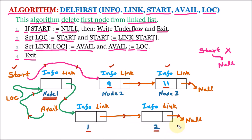These are the free nodes. So that was the algorithm to delete the first node from a linked list — we deleted node 1 from the main linked list and added it to the avail list as free space.